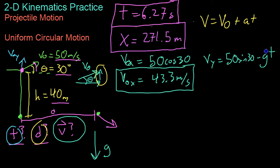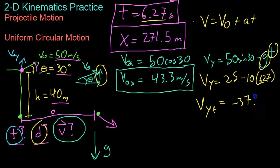And so all we have to do is plug in values for g and t, both of which we know because g is a constant on the surface of the earth, and t we solved for earlier. So vy equals 50 sine 30, which is just 25 minus 10 times 6.27 seconds. So you get the final y velocity is 25 minus 62.7, or negative 37.7 meters per second.